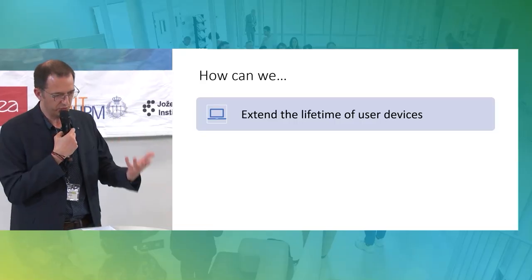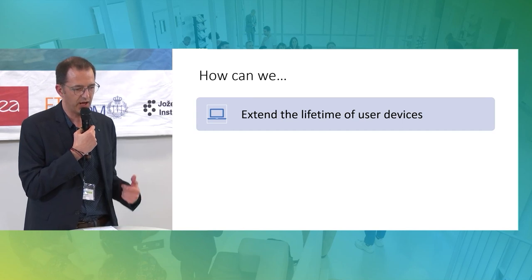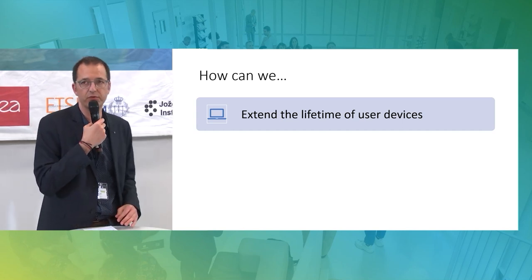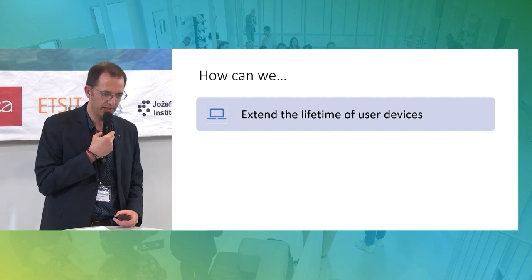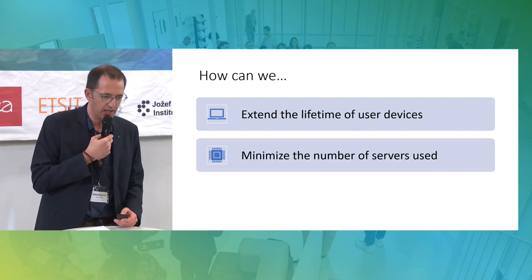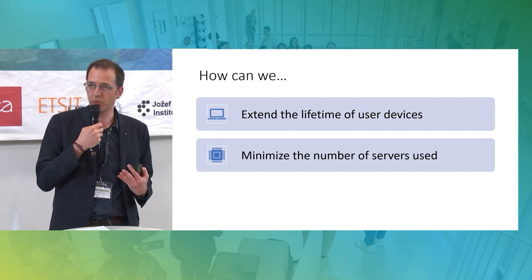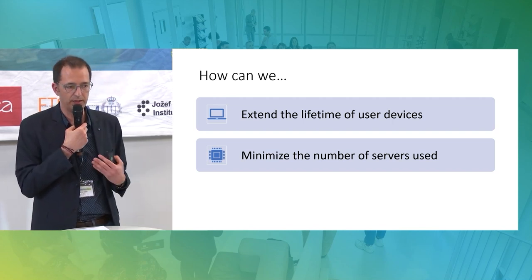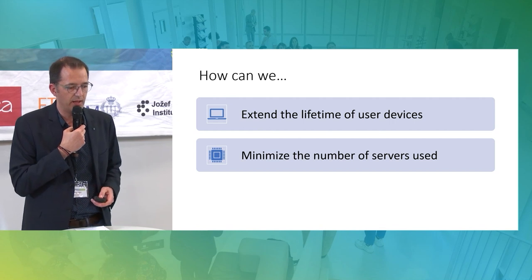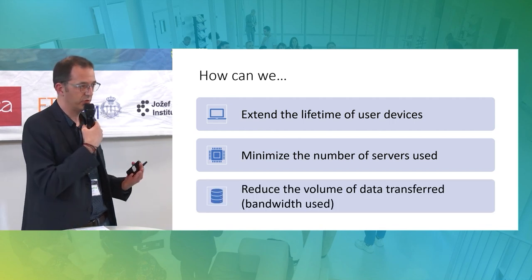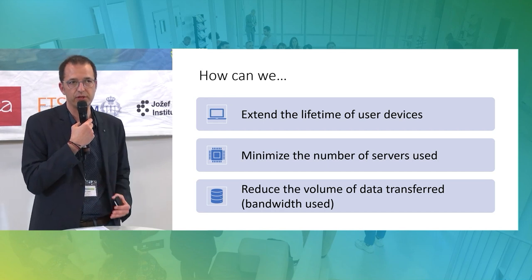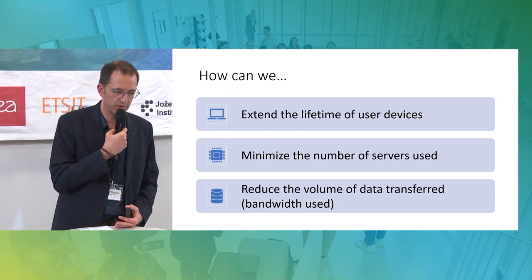All too often, we don't change our smartphones or computers because they're broken, but because they're becoming slow. Once you understand that, you realize as a developer that what you're doing has an impact on the entire software chain — from user device to servers. So the first thing you want to do is: how can we extend the lifetime of user devices? Second: how can we minimize the number of servers used in the back end? And third: how can we reduce the volume of data transferred over the network when delivering our digital service?